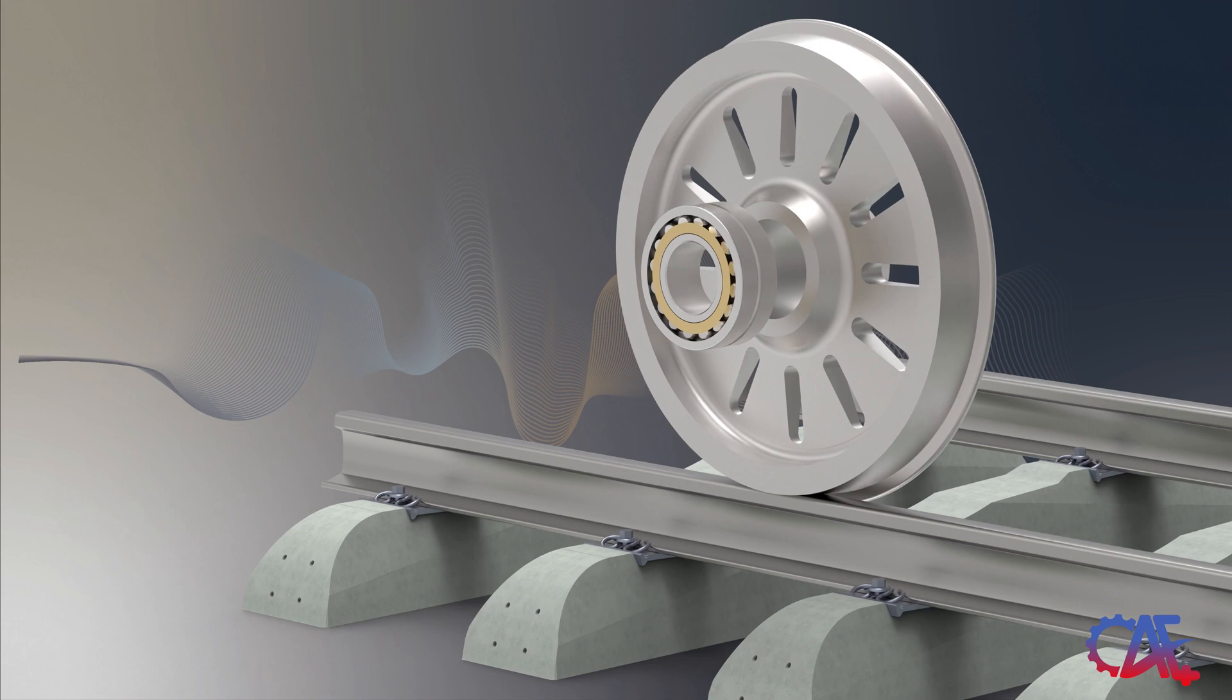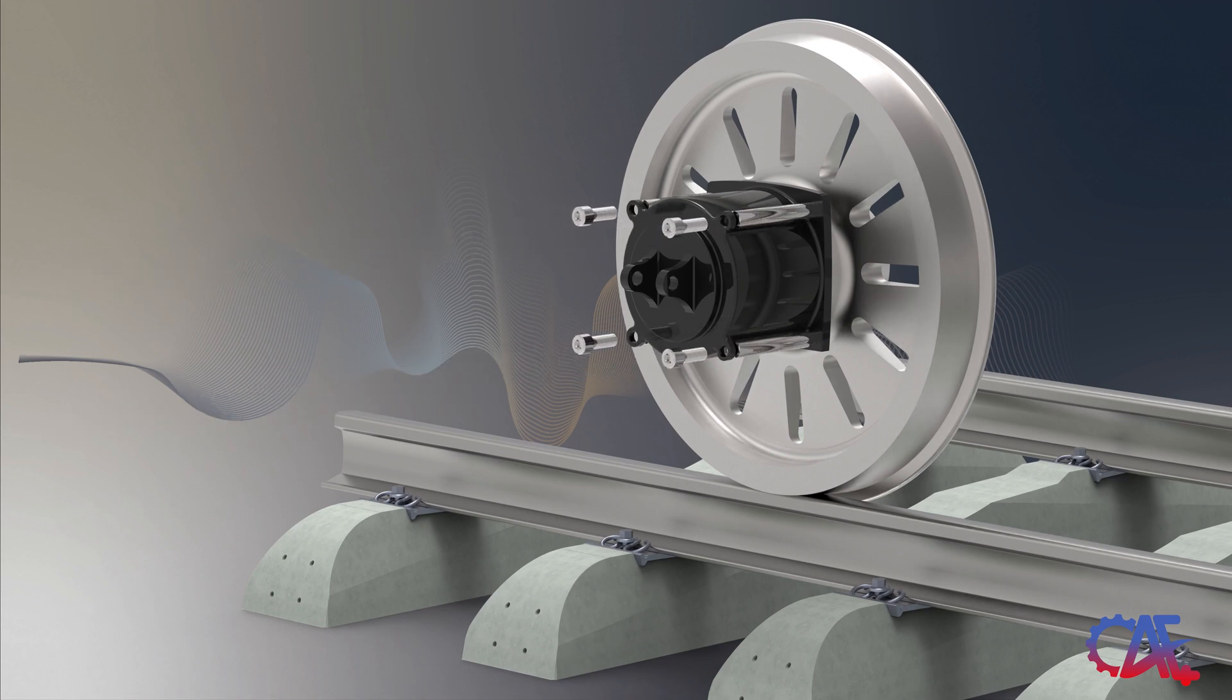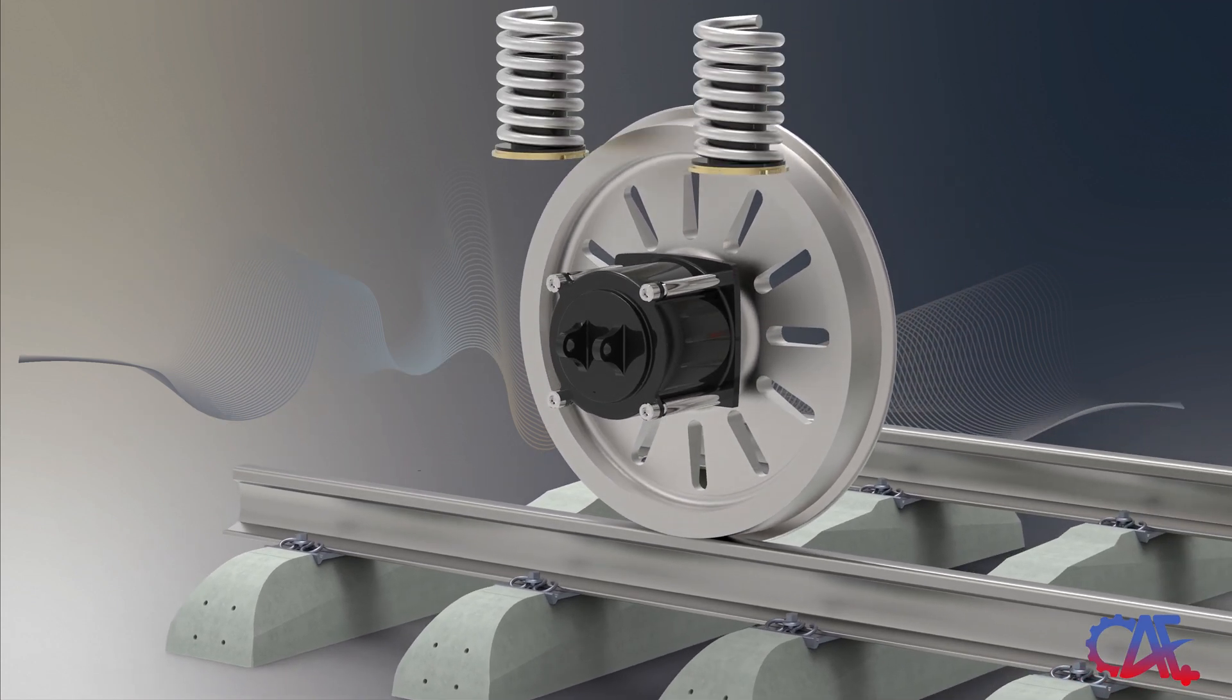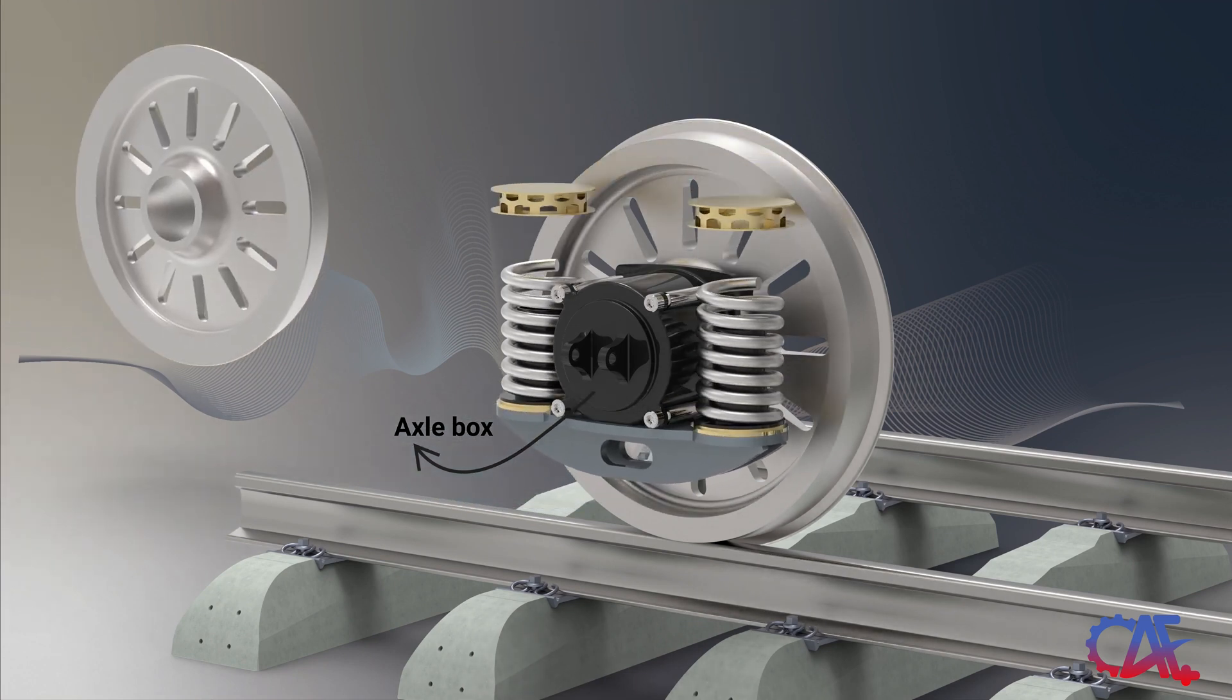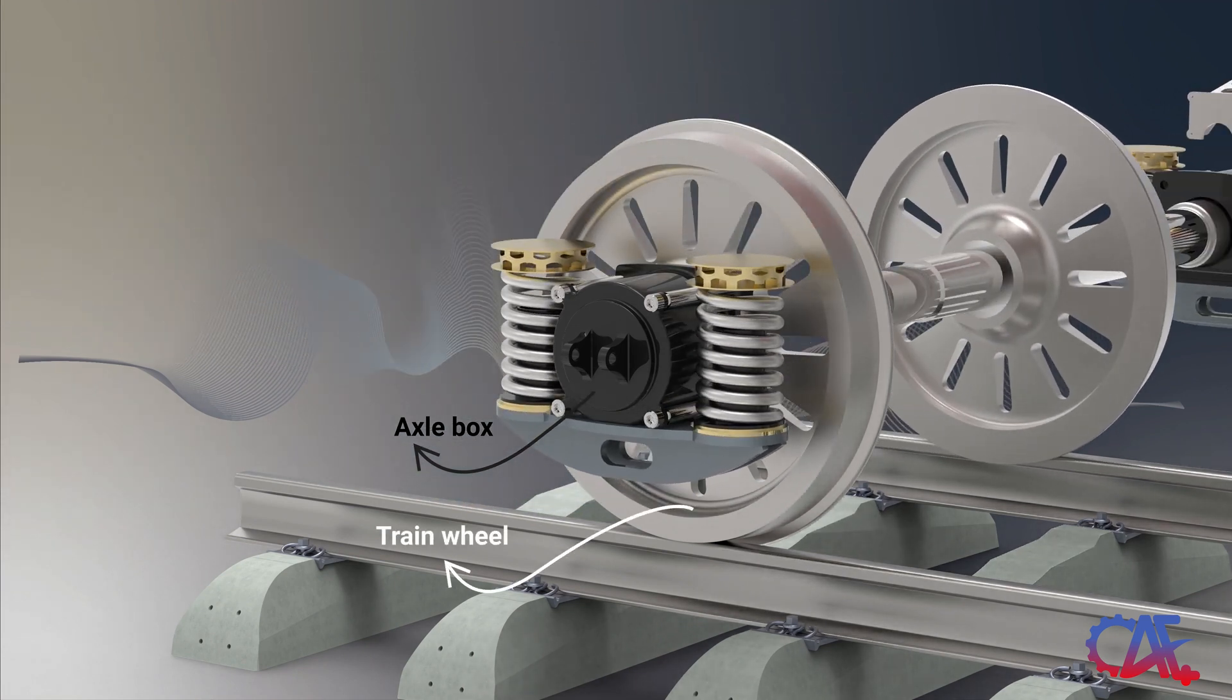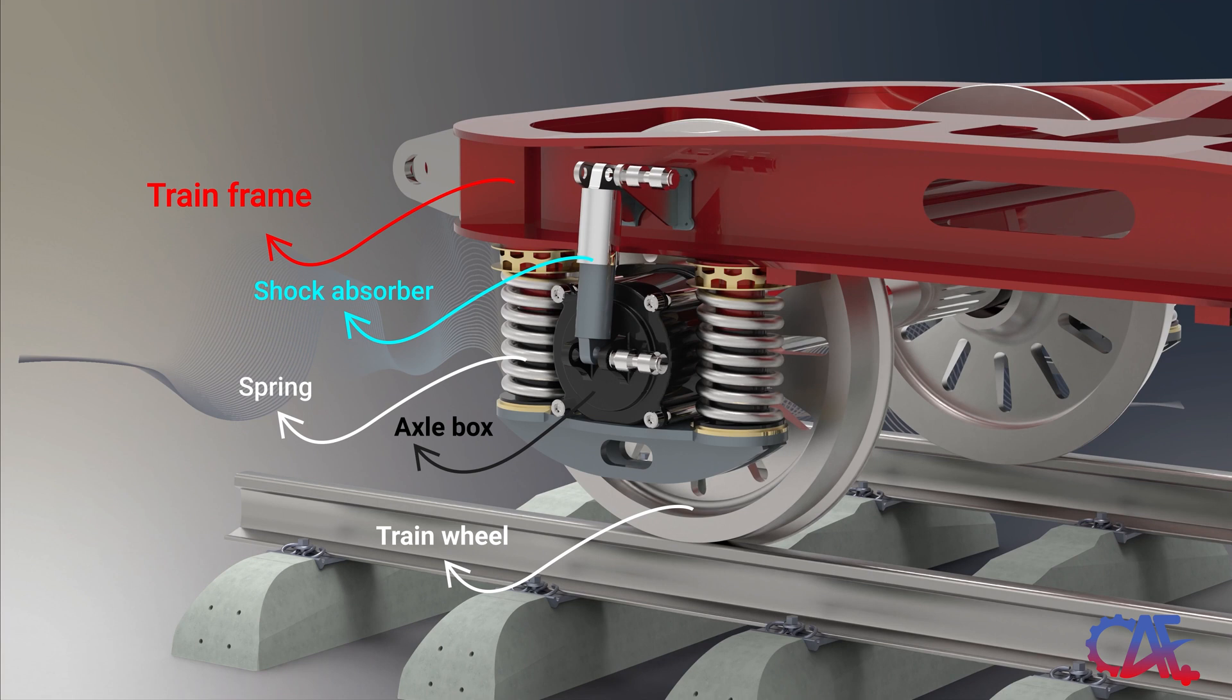Now, let's take a closer look at a real-world application of a spherical roller bearing. Within a train suspension system, we find an axle box that employs such a bearing. As shown in the animation, a train wheel is attached to the train frame via spherical roller bearings, supplemented by a suspension system made up of springs and a shock absorber.